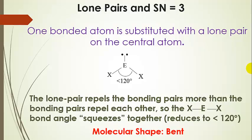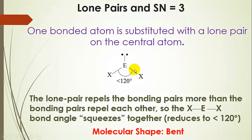What happens when we draw the molecule and end up with a lone pair on the central atom instead of a bonded atom? The steric number is still three, but now we have a lone pair instead of a bonded atom. This lone pair takes up more space and is more repulsive on the bonding pairs — it's going to distort or squeeze the bond angle together to less than 120 degrees, basically taking up more than its share of room. Lone pairs have sharp elbows and push everything else out of the way.